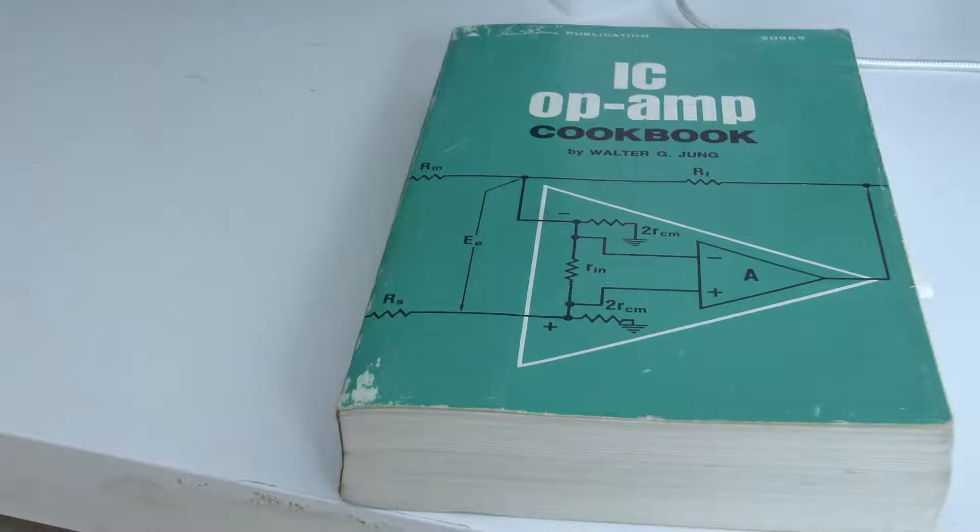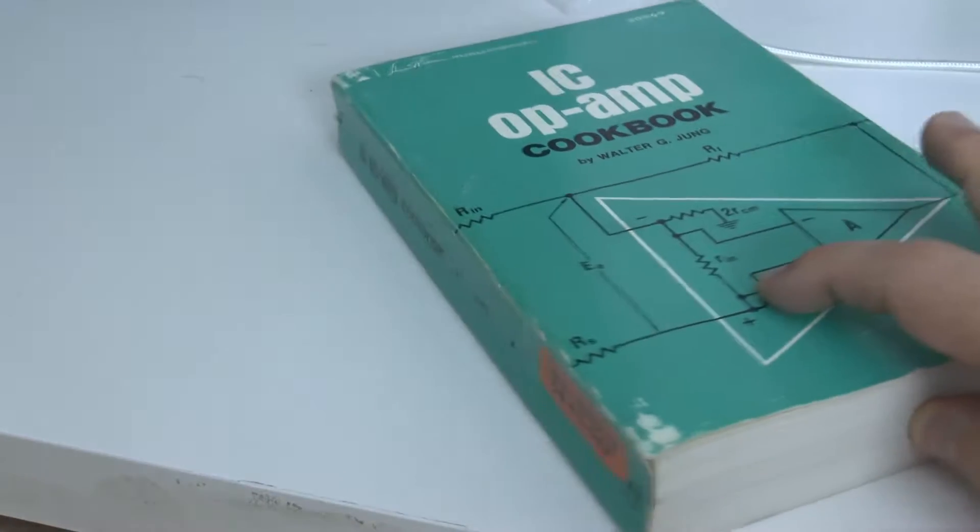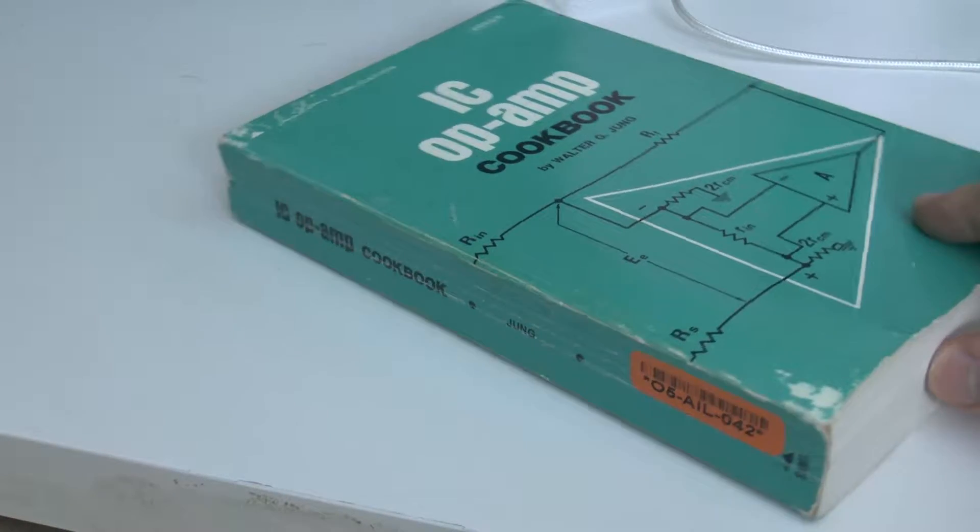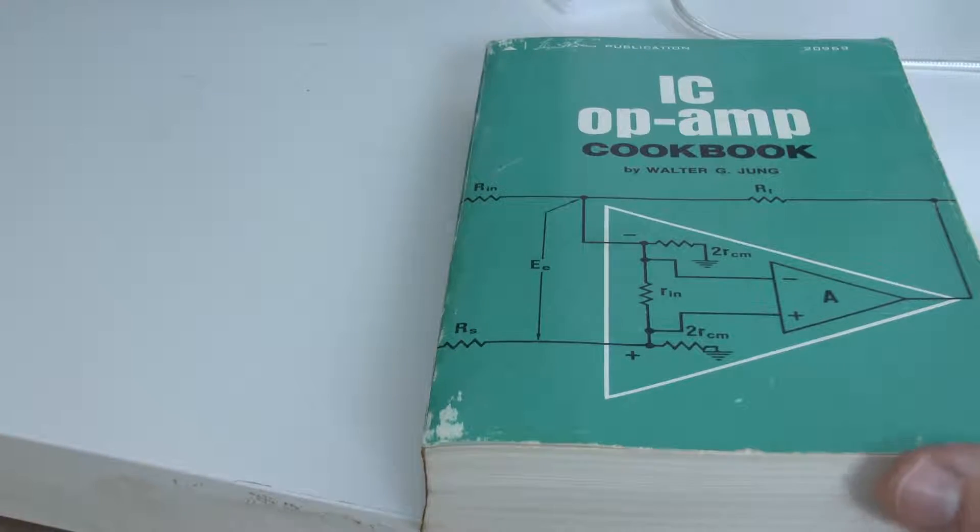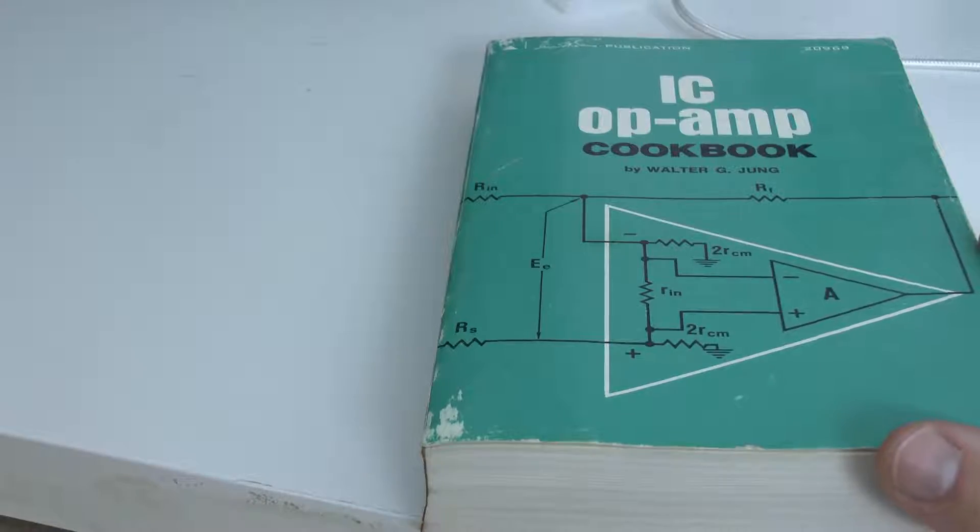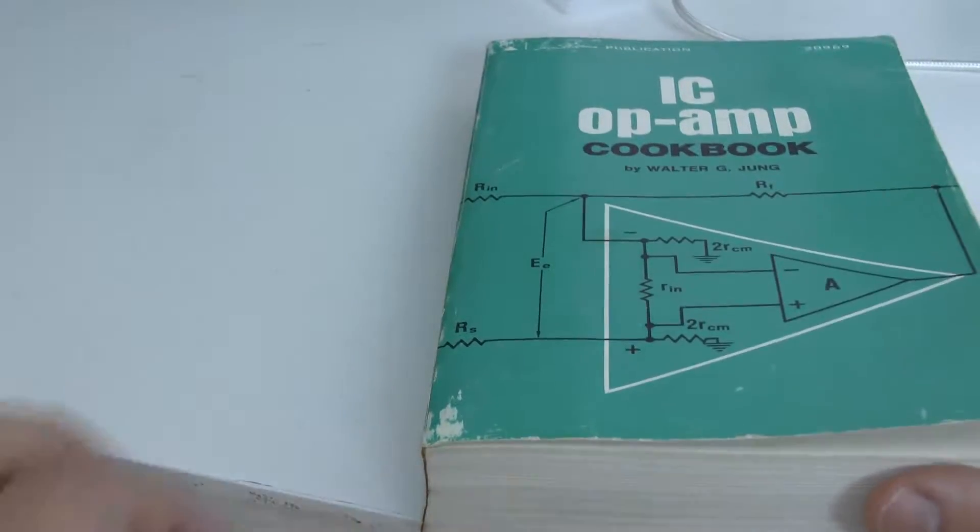So say hello to the IC op-amp cookbook from Walter G. Jung. First things first, this is not a young book by any means. The one I got I bought off Alibris, which is quite recommendable when it comes to buying used books.